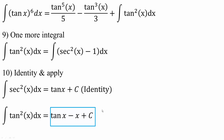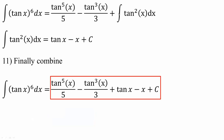Now let's combine everything. The integral of tan x raised to the sixth is equal to all the pieces combined: tan raised to the fifth x divided by five, minus tan cubed x divided by three, plus tan x minus x plus c. This is our final answer, and that's all we need to do for this problem.